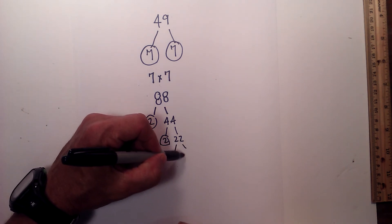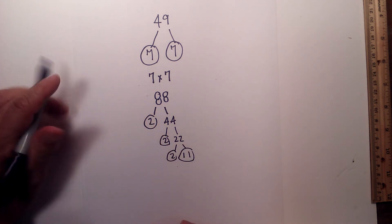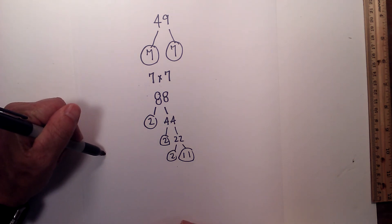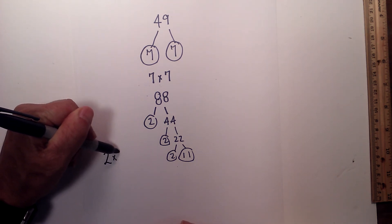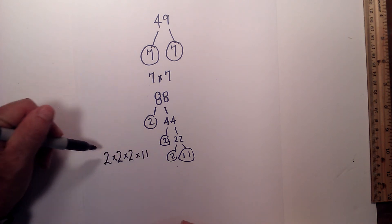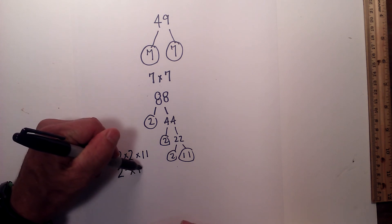And then 2 times 11 – circle both of them because they are both prime. So the prime factorization of 88 is 2 times 2 times 2 times 11, or 2 to the 3rd times 11.